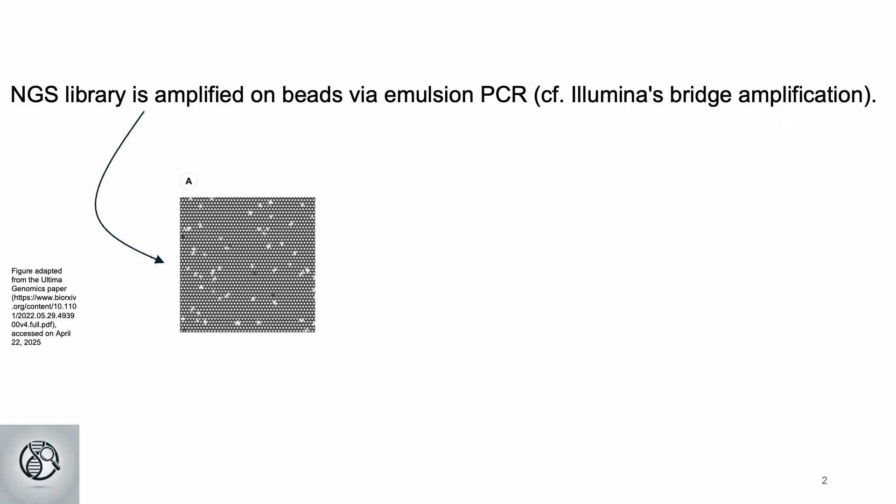This video assumes a basic understanding of NGS. After library prep, Ultima amplifies DNA on beads using emulsion PCR, similar to Illumina's bridge amplification but with key differences.